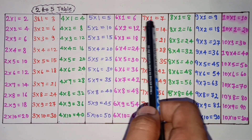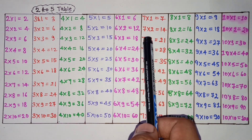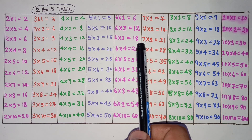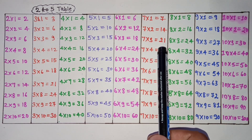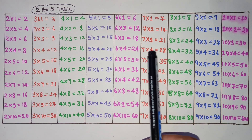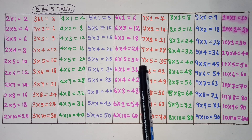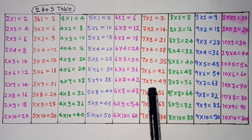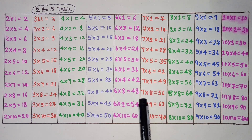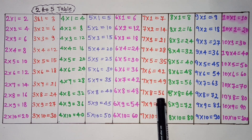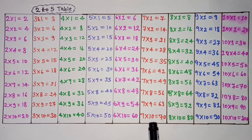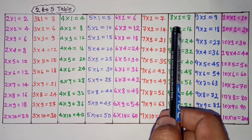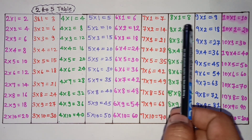7 ones are 7, 7 2's are 14, 7 3's are 21, 7 4's are 28, 7 5's are 35, 7 6's are 42, 7 7's are 49, 7 8's are 56, 7 9's are 63, 7 10's are 70.